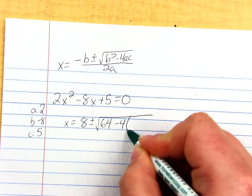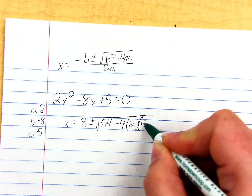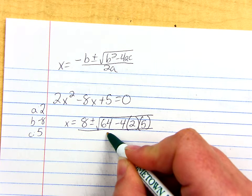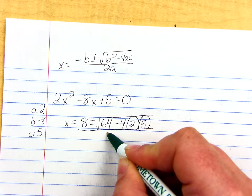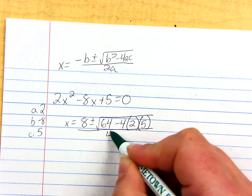Minus 4 times A, which is 2, times C, which is 5. There it is. And the whole thing is over 2 times A, which would be 2 times 2, which is 4. Good.